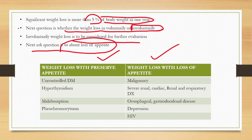Patients with weight loss with preserved appetite means they are either having uncontrolled diabetes, hyperthyroidism, malabsorption, or pheochromocytoma.